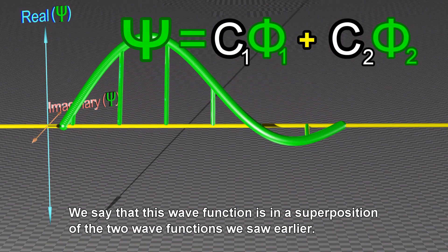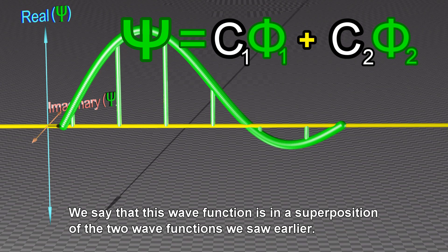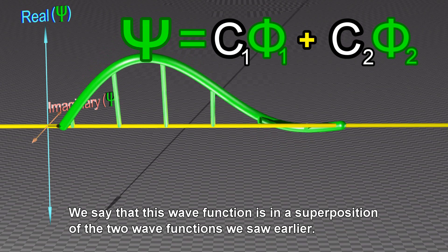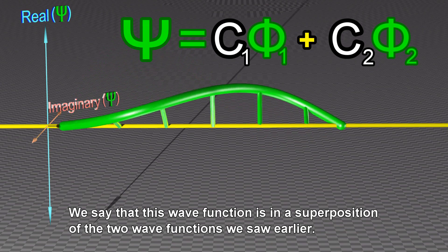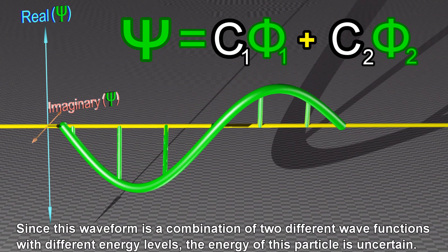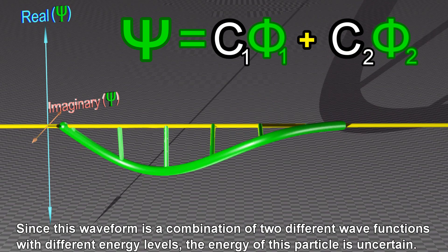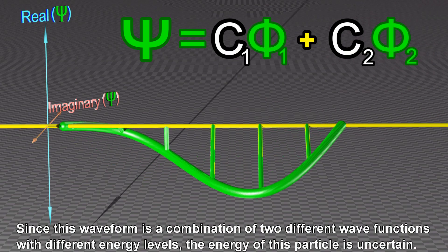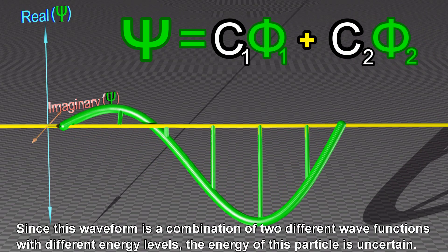We say that this wave function is in a superposition of the two wave functions we saw earlier. Since this waveform is a combination of two different wave functions with different energy levels, the energy of this particle is uncertain.